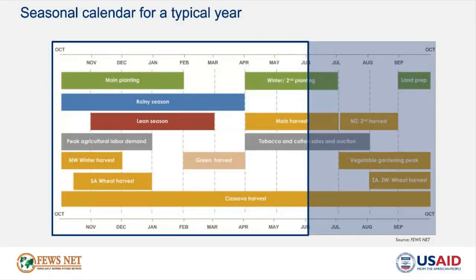Looking at the seasonal calendar for a typical year, we are currently at the beginning of summer and the main planting season, along with the start of the lean season in November through March. The wheat harvest across the region is underway, along with planting for the upcoming 2022-2023 agricultural season. The main harvest is expected to begin in April and will remain through the end of the outlook period in May. It should also be noted that in the DRC, the cassava harvest is ongoing year-round.